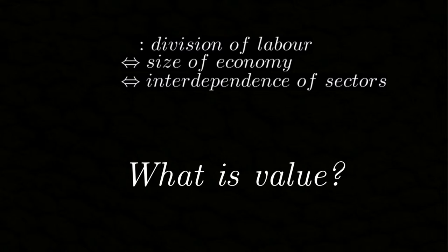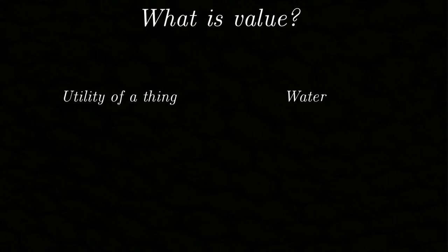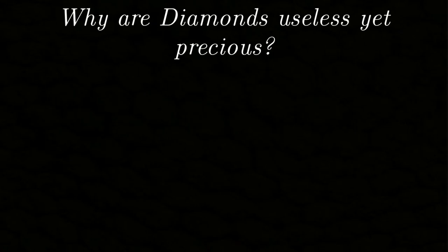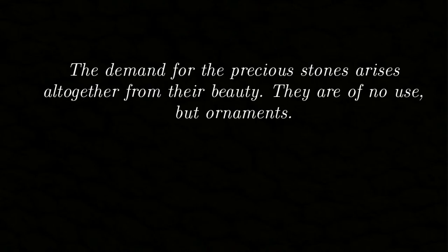Smith thought about this and observed that value can mean two different things: it might refer to the utility of a thing, or it might refer to the amount of other things you can exchange for it. Those two are by no means equivalent. Smith used as an example the contrast between water, which is highly useful — in fact it is necessary to survive — but not very valuable, and diamonds, which are valuable enough but have no use at all. Which brings us to the question of why diamonds are useful less yet valuable. Smith considers their beauty; in fact he writes: 'The demand for those precious stones arises altogether from their beauty. They are of no use but as ornaments.'